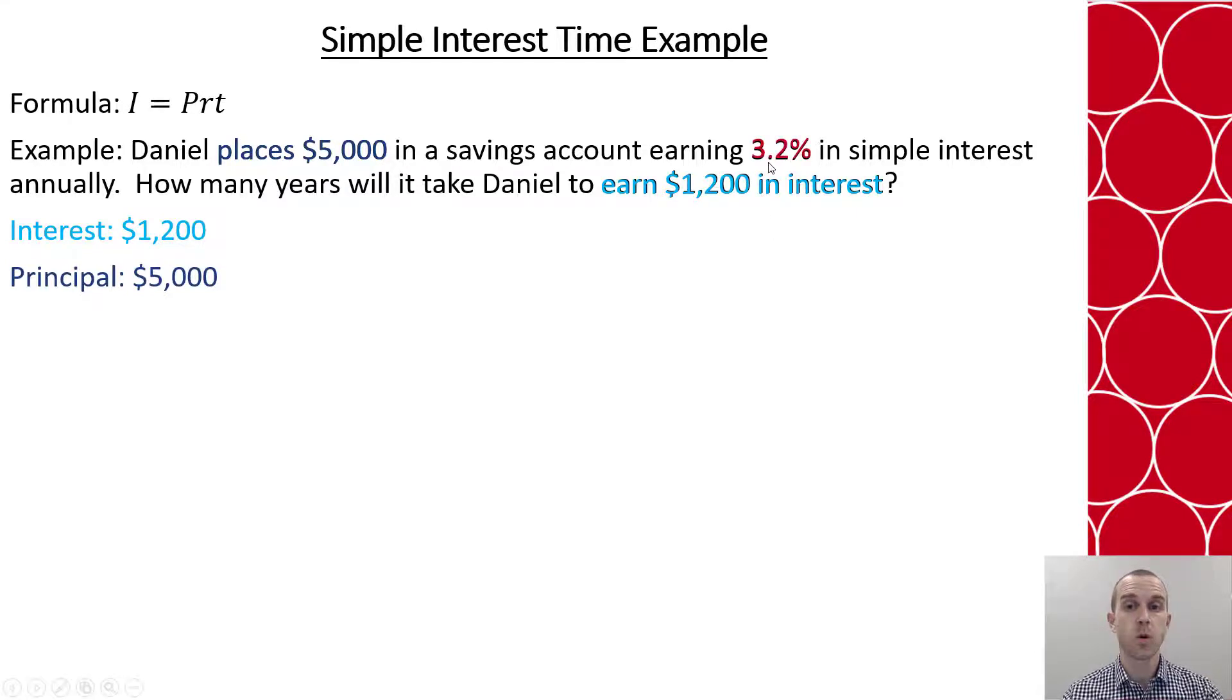Do we know the interest rate? Yes, it's 3.2%, and so we write that as .032. Last thing, do we know time? No. We do know it's annually, but we want to know how many years it will take. So we're calculating the time in this case.